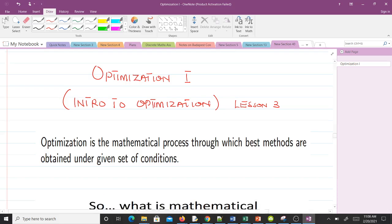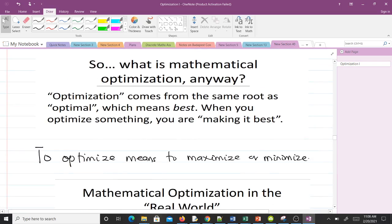What is mathematical optimization anyway? Optimization comes from the same root as optimal, which means best. When you optimize something, you are making it best. To optimize means to maximize or minimize.